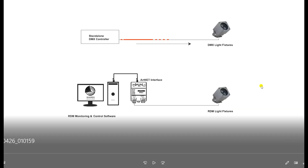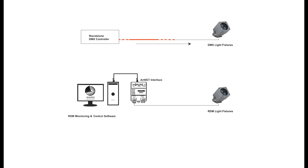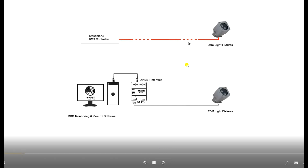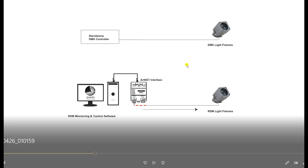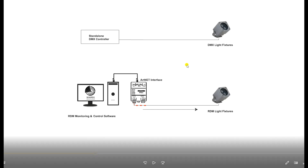In DMX, there is a standalone DMX controller. From that standalone DMX controller, it gives a signal — a command — to the DMX light fittings to change the color, dim the lights, or anything else. This signal is called unidirectional, meaning the DMX system sends a one-directional signal to the lights. You can set them on and off, change color, and so on — anything you can do with DMX.